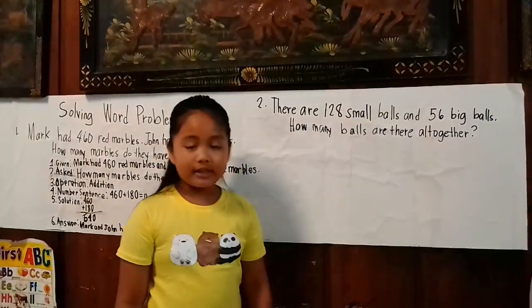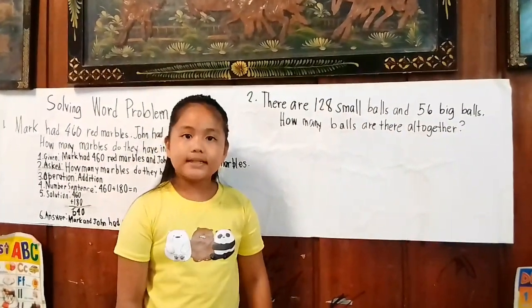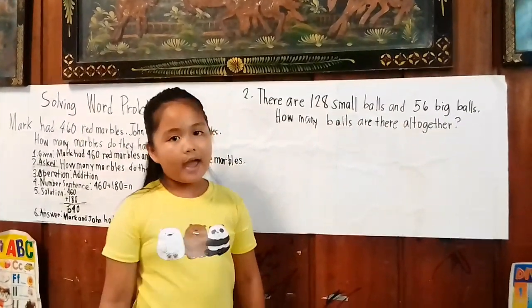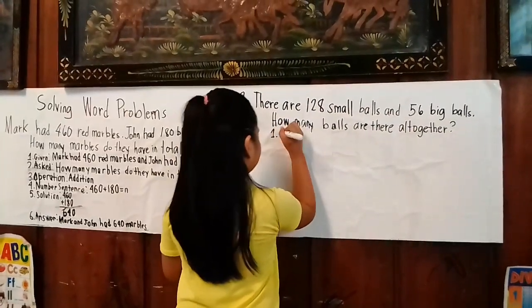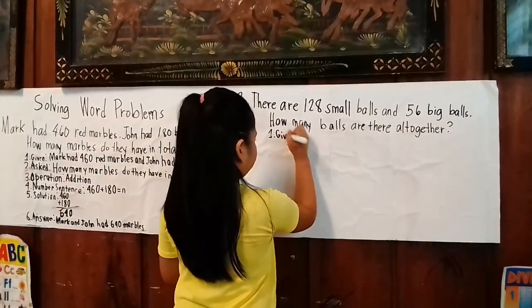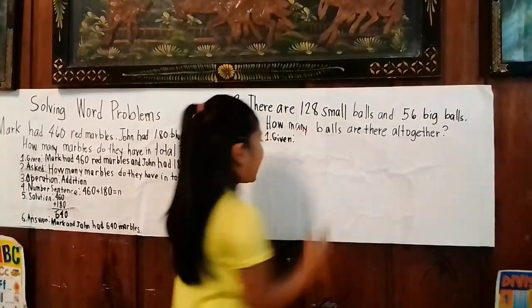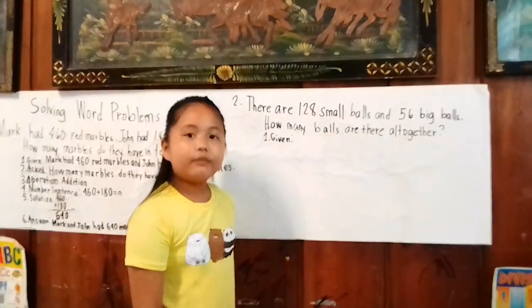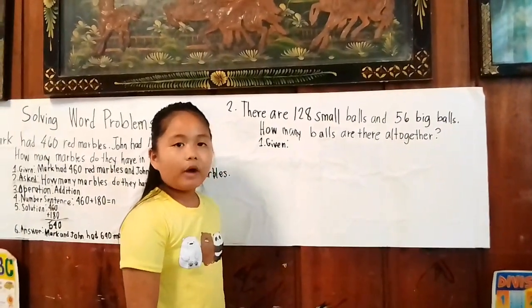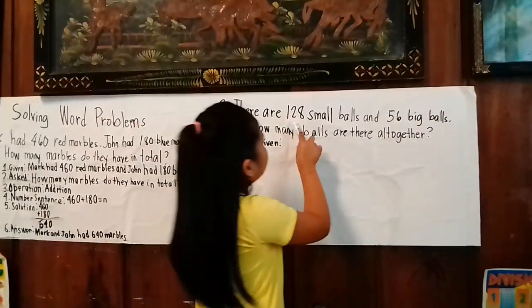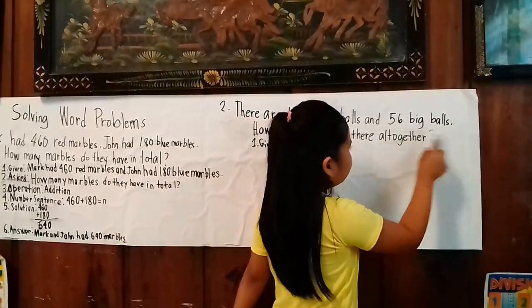What is the first step again? The first step is 'Given.' What is the given in the problem? The given in the problem is: there are 128 balls and 56 balls.